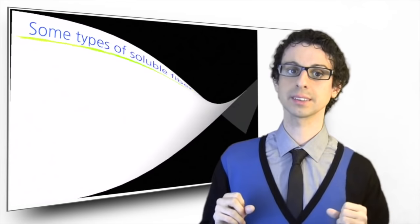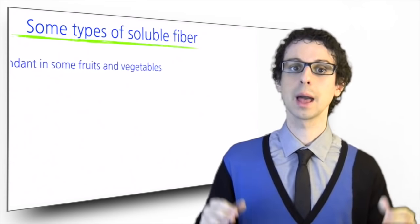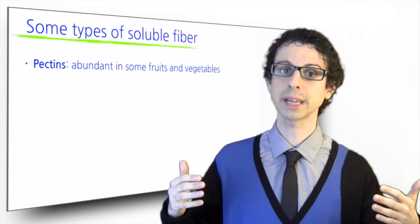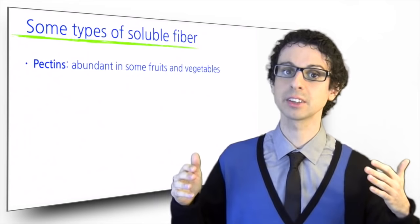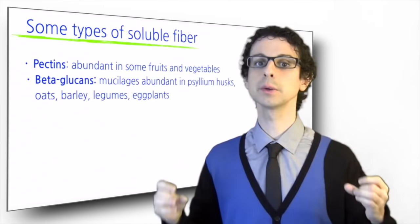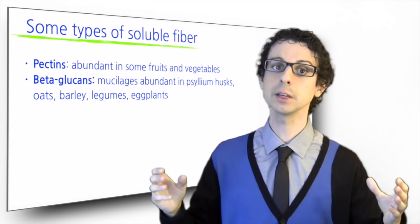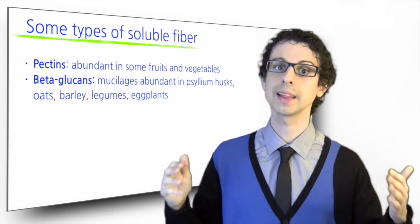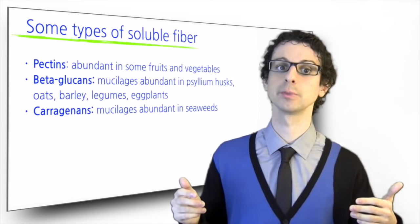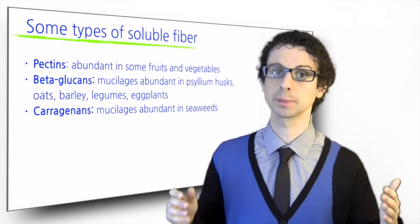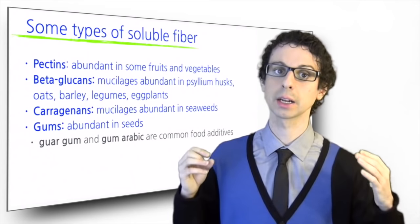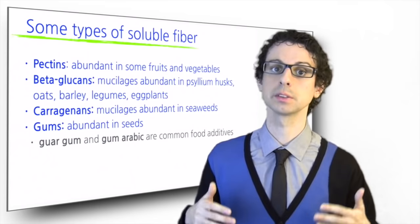These are some important examples of soluble fibers. Pectins are found in the white part of citrus fruit, in some types of apples, in brassica vegetables such as cabbage, and in the pulp of many fruits. Beta-glucans are mucilages found in psyllium husks, oats and barley, legumes and eggplants. Carrageenans are another type of mucilage found in seaweeds. Gums are found in seeds, and some of them, such as guar gum and gum arabic, are commonly used food additives.